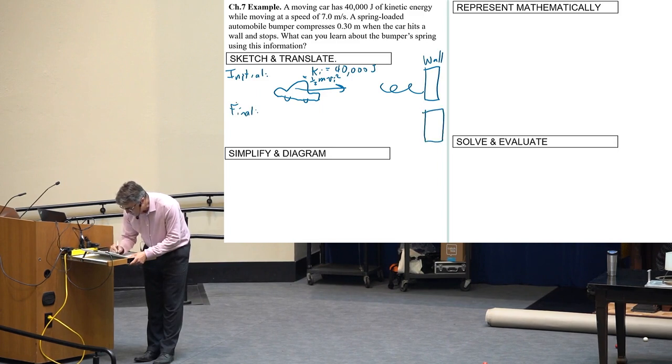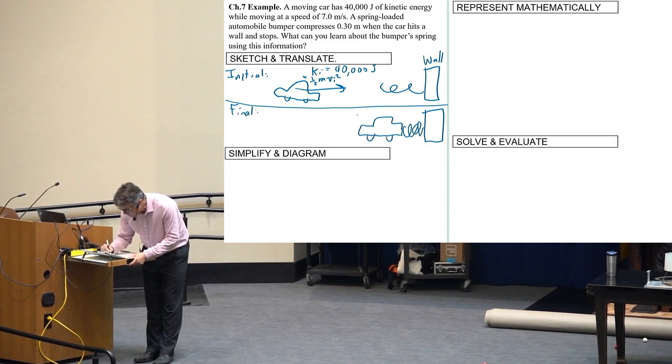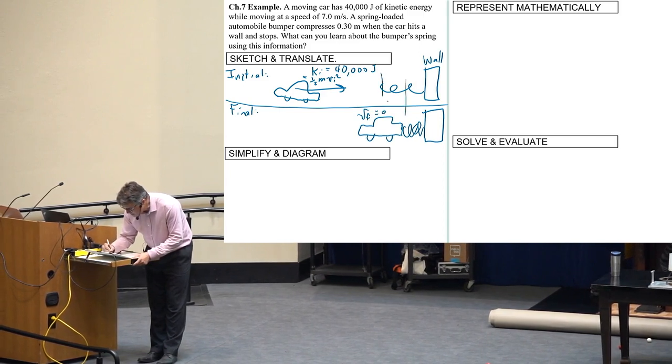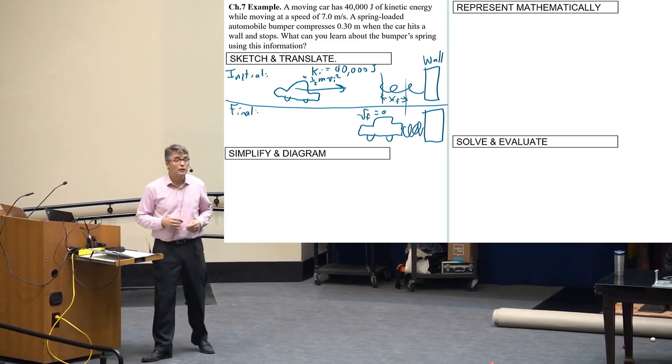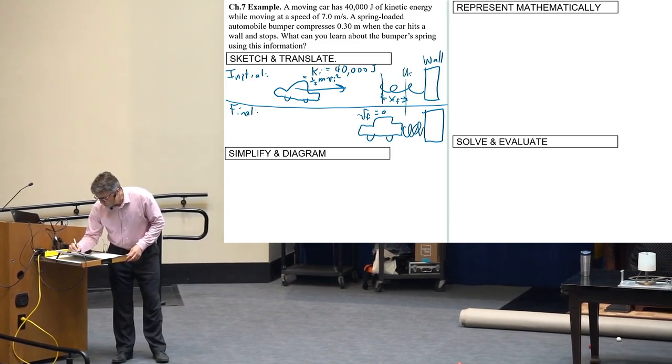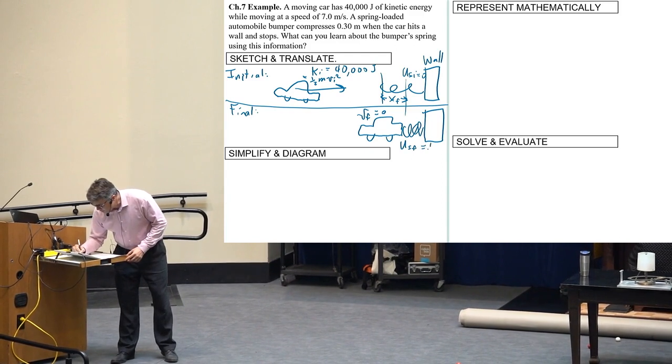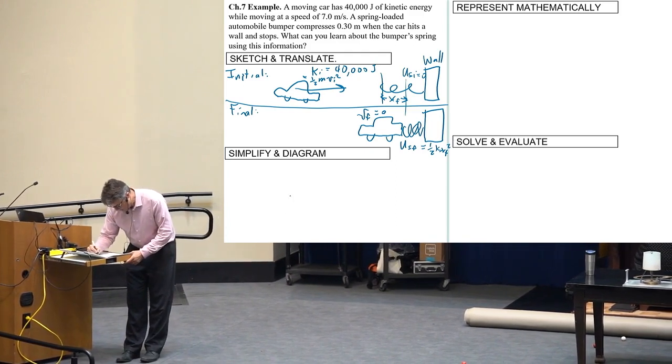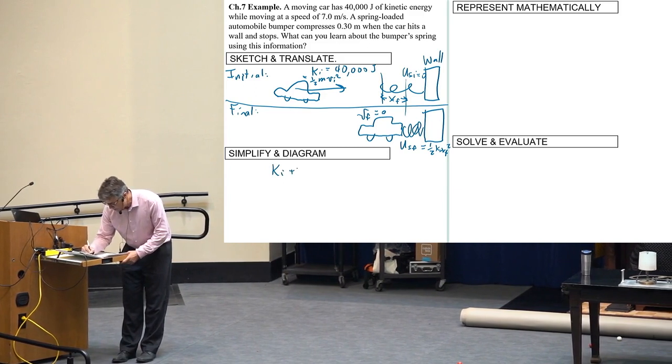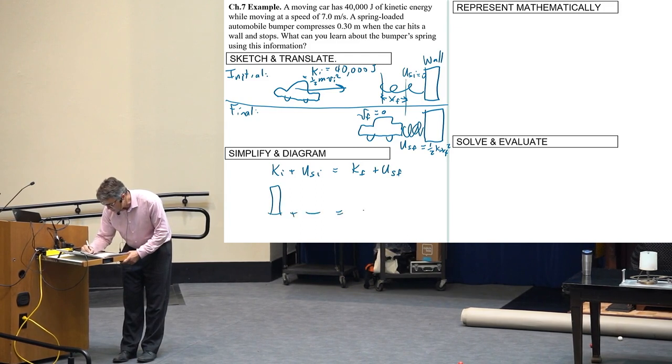And then finally, what happens is that there's the same wall, but now the spring gets compressed and the car stops. So V final equals zero. And then there's some distance, X final, that the spring compresses. So U spring initial equals zero because the spring is unstretched at the beginning. And there will be some U spring final is 1/2 K X final squared. Does that make sense? And if you want to do the simplifying diagram step, I would say that the kinetic energy initial plus the U spring initial equals the kinetic energy final plus the U spring final. And you can do it in terms of these bar charts. Same sort of thing. It stops.